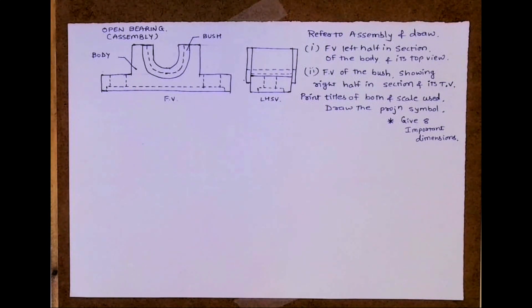We need to draw two parts. One is body and another one is bush. If you read, they have given front view left half in section of the body and its top view. So we need to draw body front view and top view and left half in section.